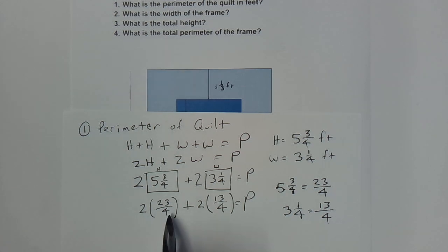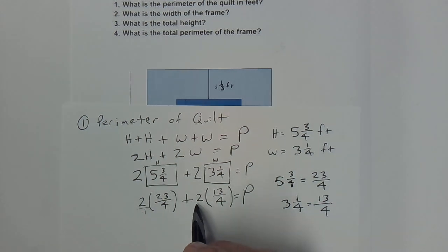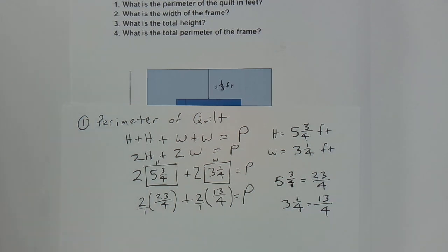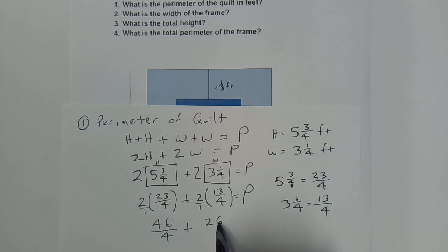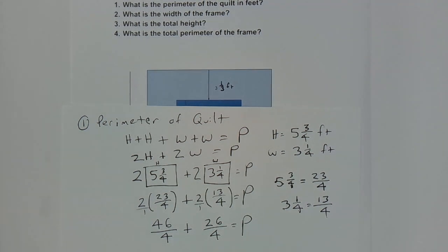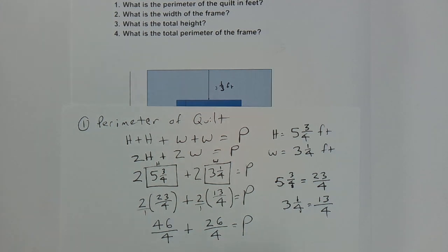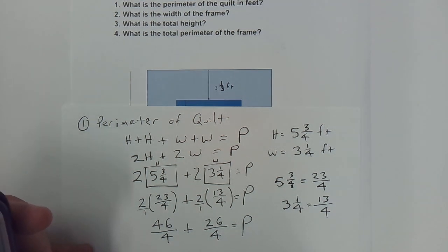When multiplying fractions you don't need a common denominator — just multiply straight across. Two over one times 23/4 gives 46/4, and two over one times 13/4 gives 26/4. Since we already have a common denominator, we just add the numerators: 46 + 26 = 72. So 72/4 equals our perimeter.